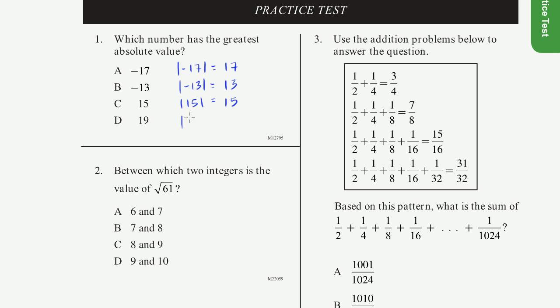And then finally, the absolute value of 19 is going to be equal to 19. So the number that has the greatest absolute value, the greatest absolute value is right there. It's 19. So 19 has the greatest absolute value. So it also happens to be the largest number here, just like that.